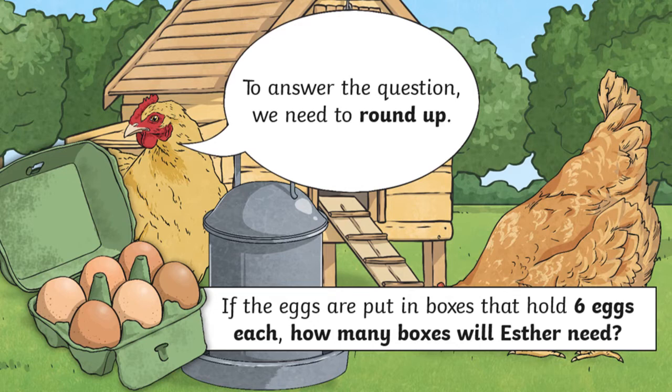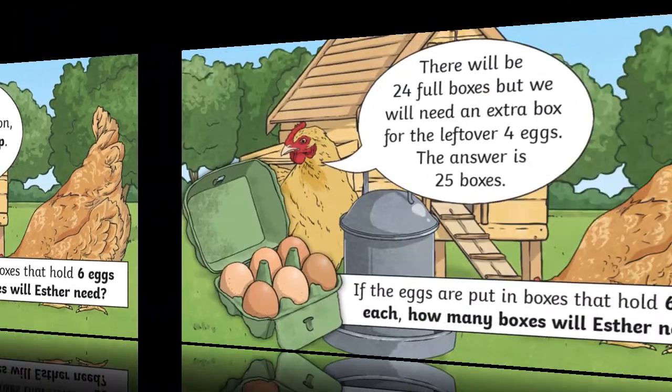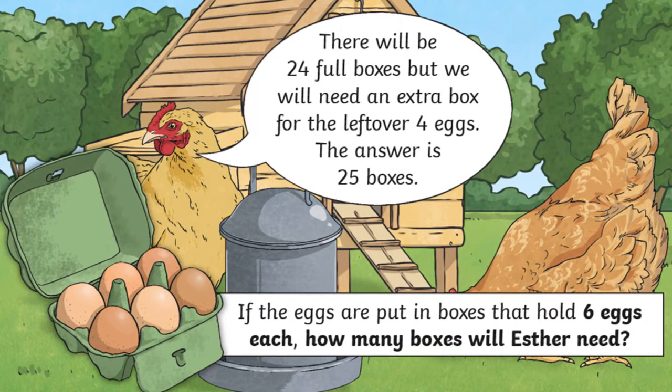To answer this question we'd need to round up. If the eggs are put into boxes that hold six each, how many boxes will Esther need? We're not going to throw the four remainders away so they would still need to go into a box. So we would round the answer up. So we would have 24 full boxes and an extra box for the leftover four eggs. So our answer would be 25 boxes.